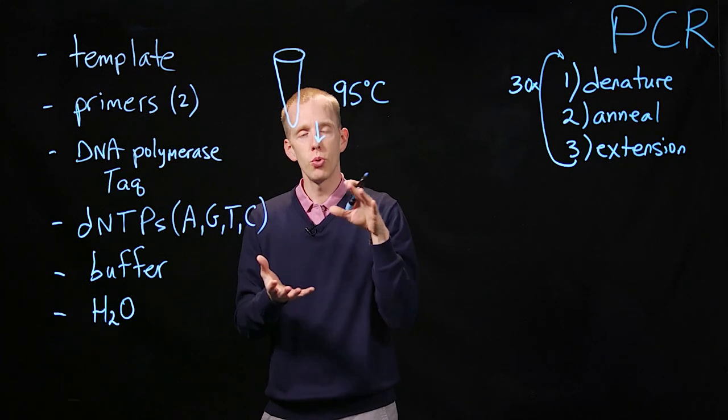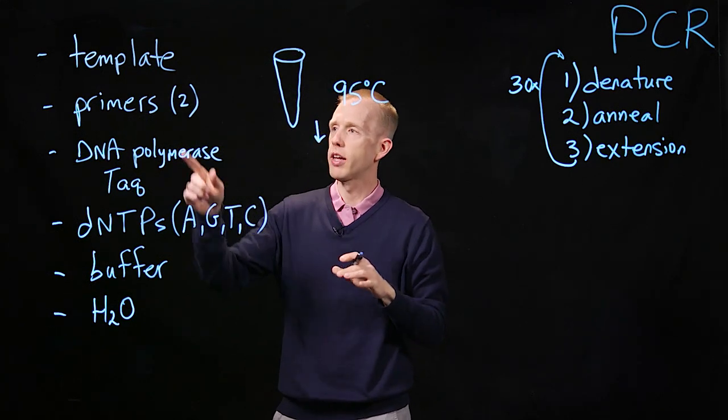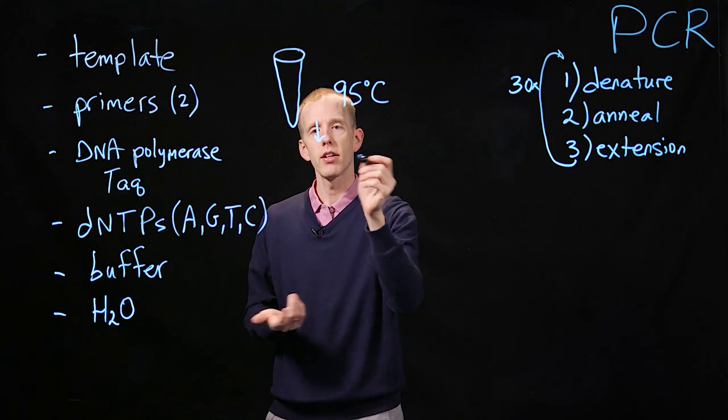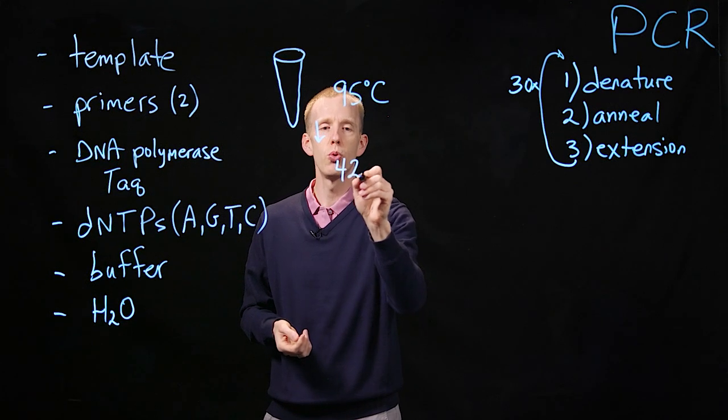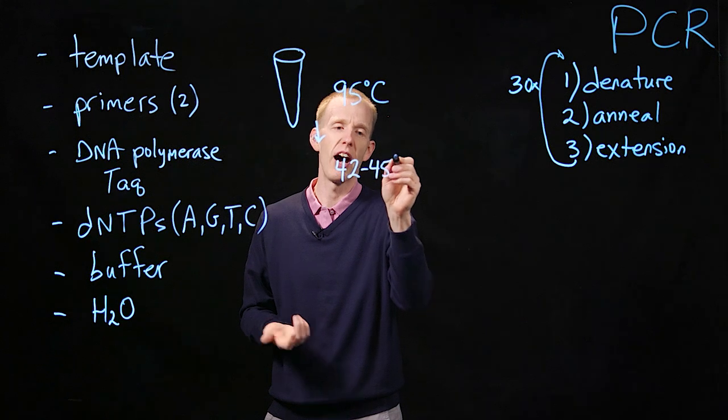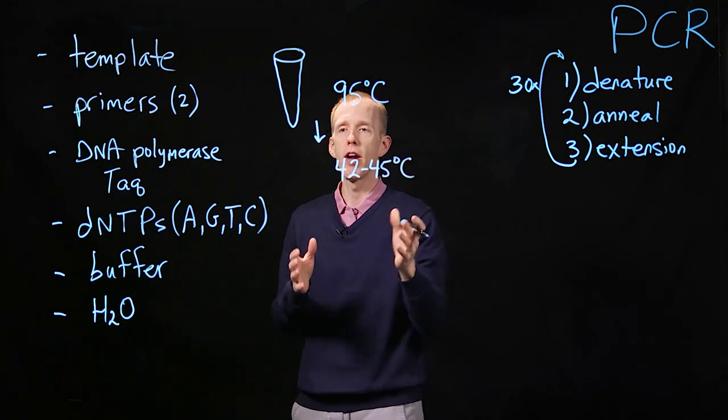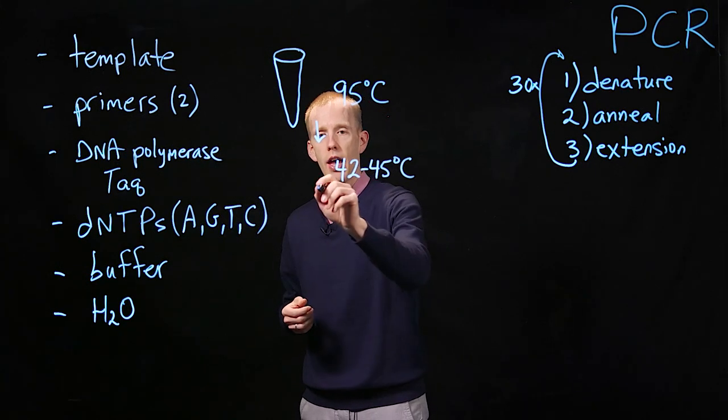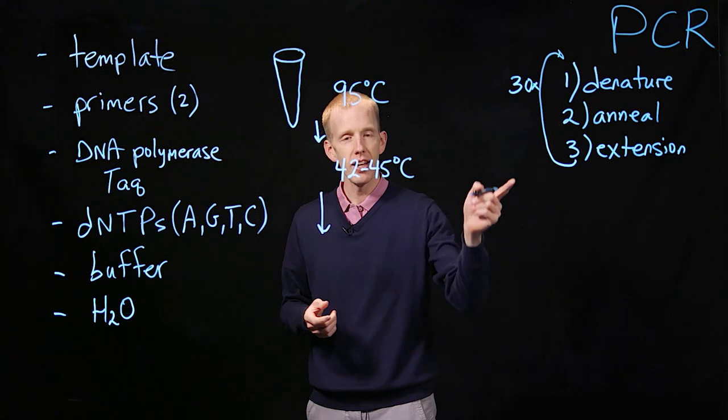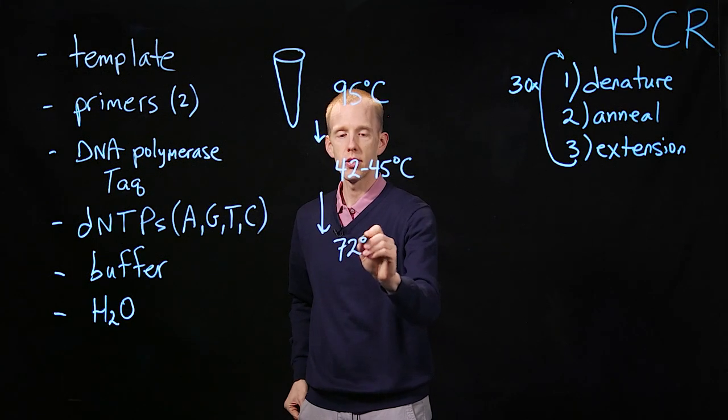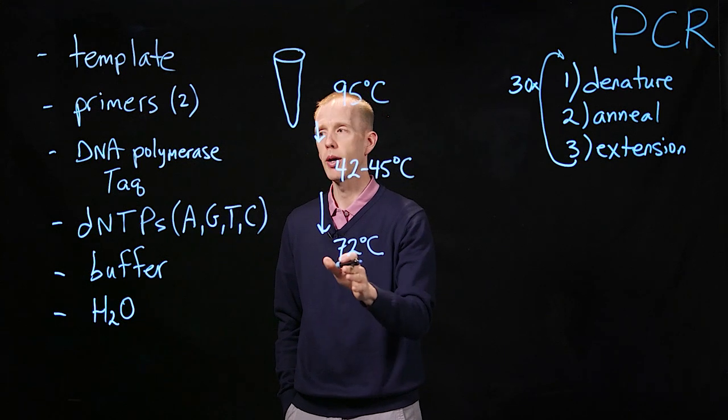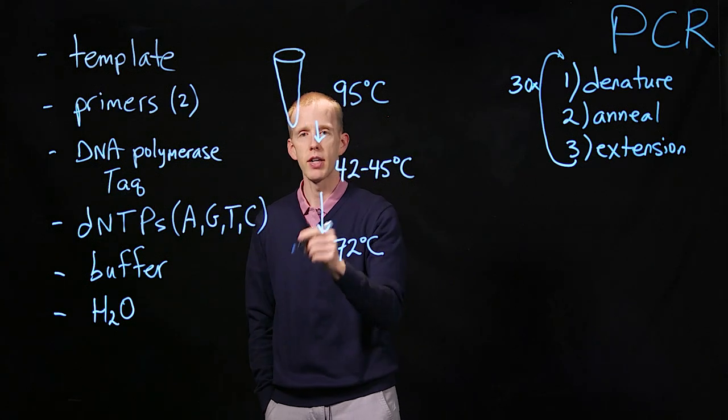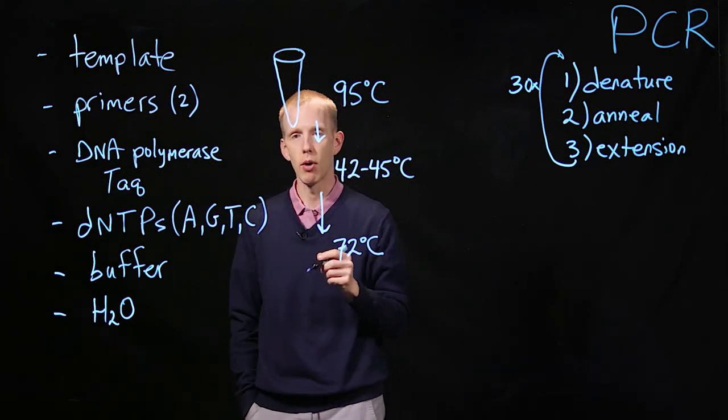After that, we need to cool, as I mentioned earlier, the solution down to let the primers re-anneal or base pair with those template molecules. And that annealing step takes place at a range of cooler temperatures, somewhere between 42 and 45 degrees centigrade, let's say, although it varies depending on the actual nucleotide composition of the primers themselves. And after that, we have the extension step, which happens at 72 degrees centigrade, and that's only because that happens to be an optimal temperature for the TAC DNA polymerase to incorporate those deoxynucleotide triphosphates into the newly synthesized DNA molecules.